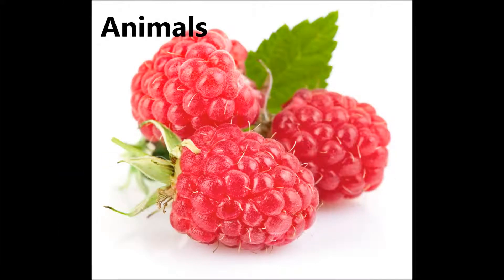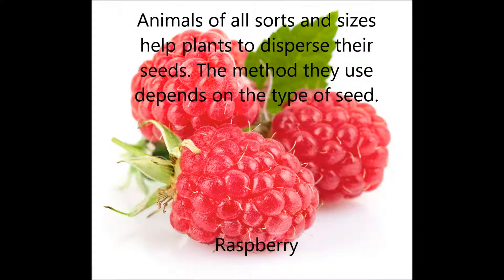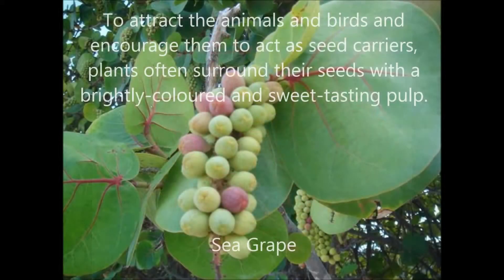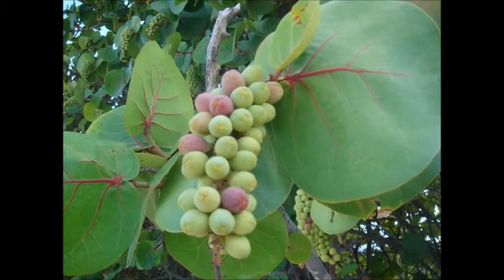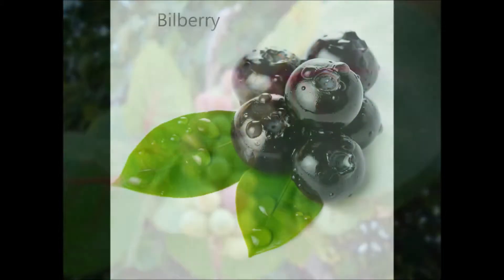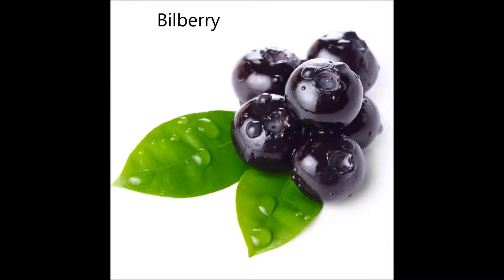Dispersal of Seeds by Animals. Animals of all sorts and sizes help plants to disperse their seeds. The method they use depends on the type of seed. To attract animals and birds and encourage them to act as seed carriers, plants often surround their seeds with a brightly colored and sweet tasting pulp. As well as eating them, some animals collect the fruits or seeds and bury them to eat later.